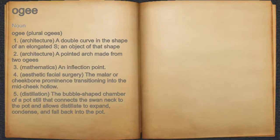O.G. Noun. 1. Architecture: a double curve in the shape of an elongated S, or an object of that shape.